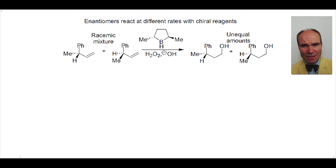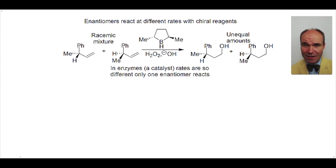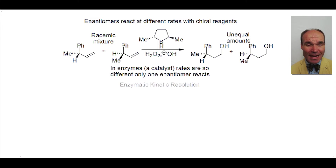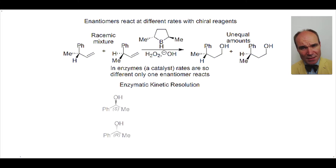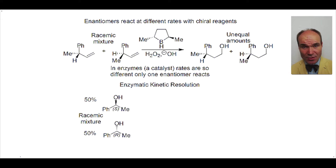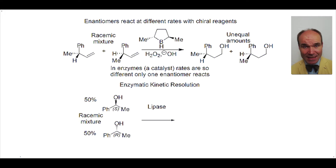Not only chiral reagents but also chiral catalysts react with enantiomers of a substrate at different rates. The most extreme examples of this are often enzymes — they are a single enantiomer. Let's examine enzymatic kinetic resolution. We start with a racemic mixture of a secondary alcohol and use an enzyme called a lipase to catalyze esterification. What's the result?